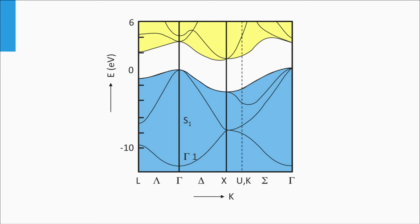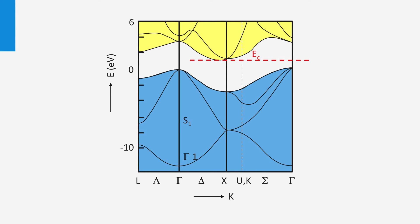Here we see the real electronic band structure of crystalline silicon. The white area reflects the energy levels in the forbidden band gap. The horizontal axis reflects the lattice momentum in various directions. The band gap of silicon is determined by the lowest energy point of the conduction band at X, related to the 100 direction, and the highest energy value of the valence band at gamma.